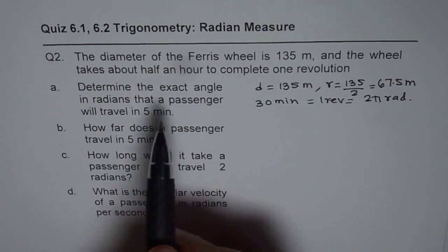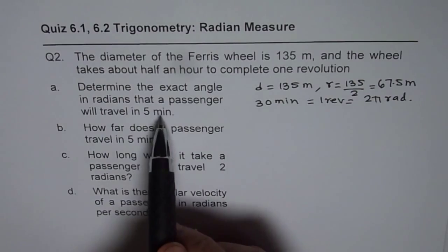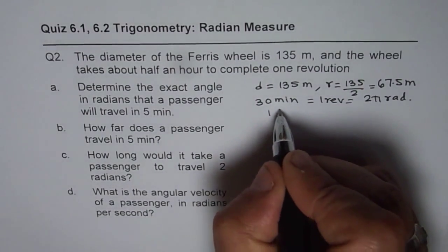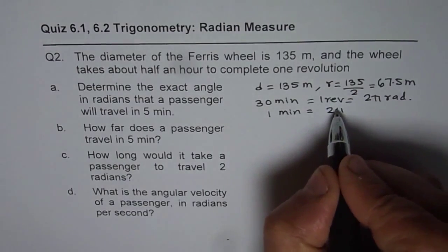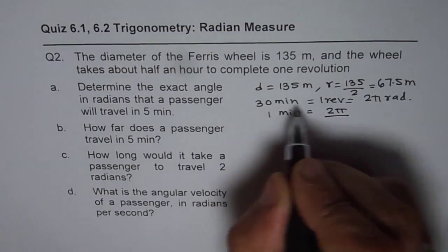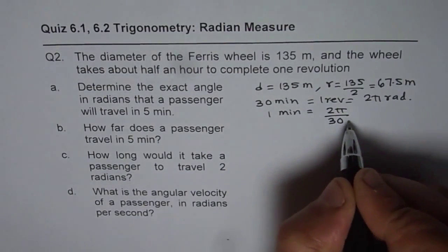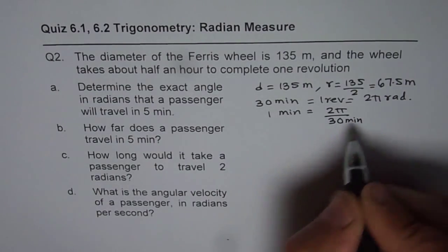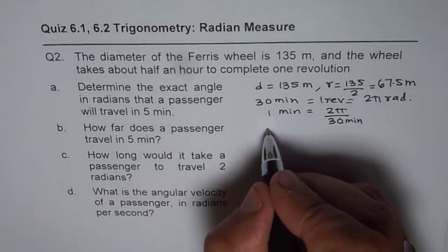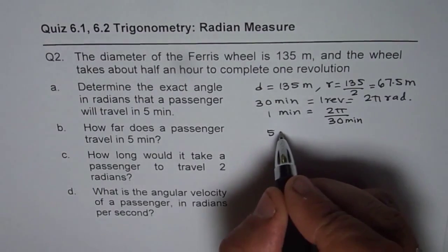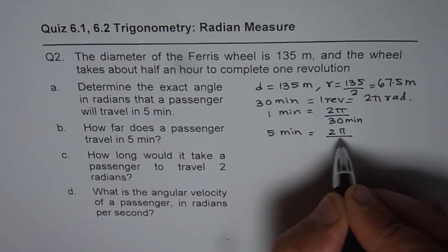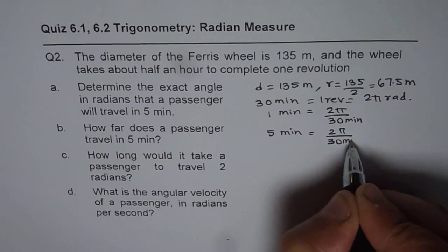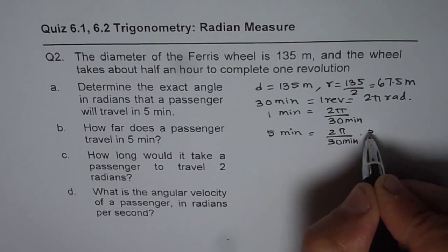You need to find how many radians in five minutes. In one minute it should be 2π divided by 30 minutes. Therefore in five minutes it should be five times this. So in five minutes we will get 2π divided by 30 minutes times five minutes.